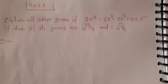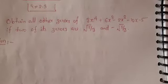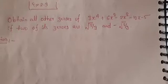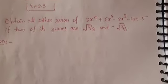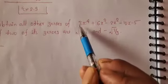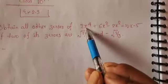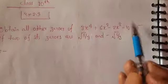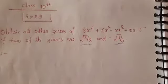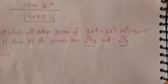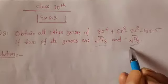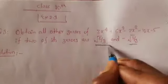Hello students, today we are going to do a few more questions on polynomials. The question is: obtain all other zeros of a given polynomial if two of its zeros are given. First, we check this polynomial has degree four, so it will have four zeros. Two zeros are already given and we have to find the other two. If two zeros are given, we can find two factors.